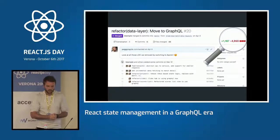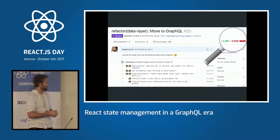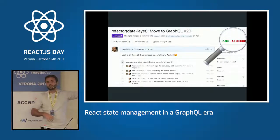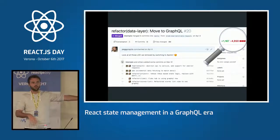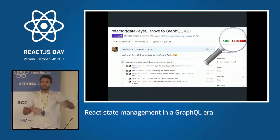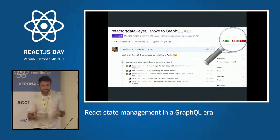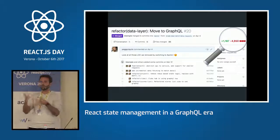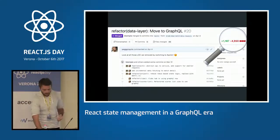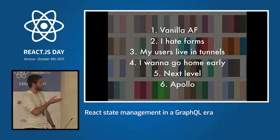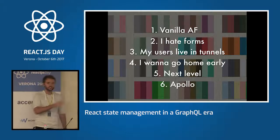I have an example from Peggy Raises — her team replaced Redux with Apollo and removed around 5,000 lines of code: all the actions, reducers, and boilerplate. They ended up adding back about 1,000 lines, but it's still a huge win. Onboarding new developers also becomes easier. Here are the stacks I'd suggest: Vanilla, I Hate Forms, My Users Live in Tunnels, I Want to Go Home Early, Next Level, and Just Apollo.